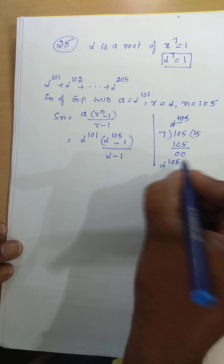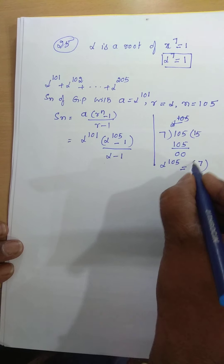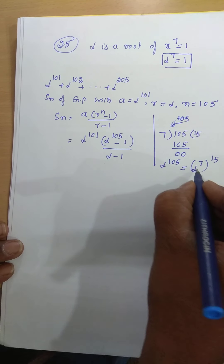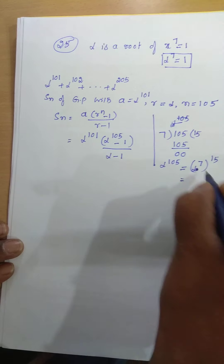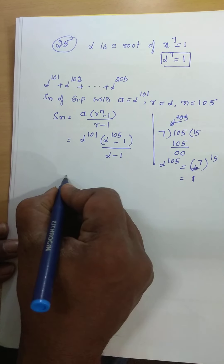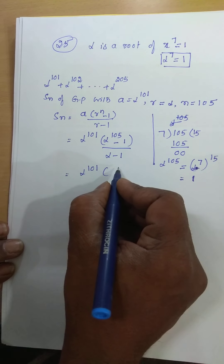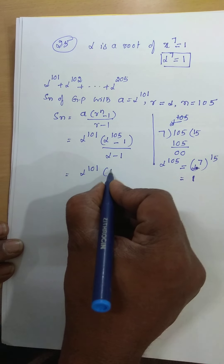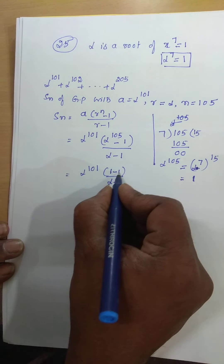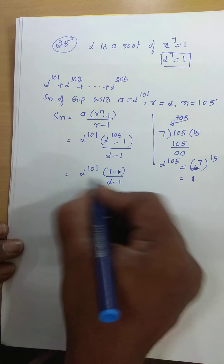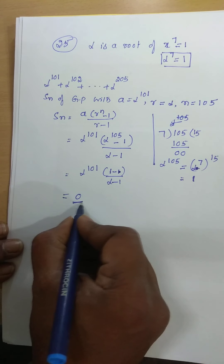Therefore, alpha power 105 can be written as alpha power 7, whole power 15. But what is alpha power 7? Look here — alpha power 7 is equal to 1. So 1 power 15 is 1. Substituting here: alpha power 101 into alpha power 105, which is 1, minus 1, divided by alpha minus 1. What is 1 minus 1? Zero. Zero divided by something is 0. This is the solution for this question.